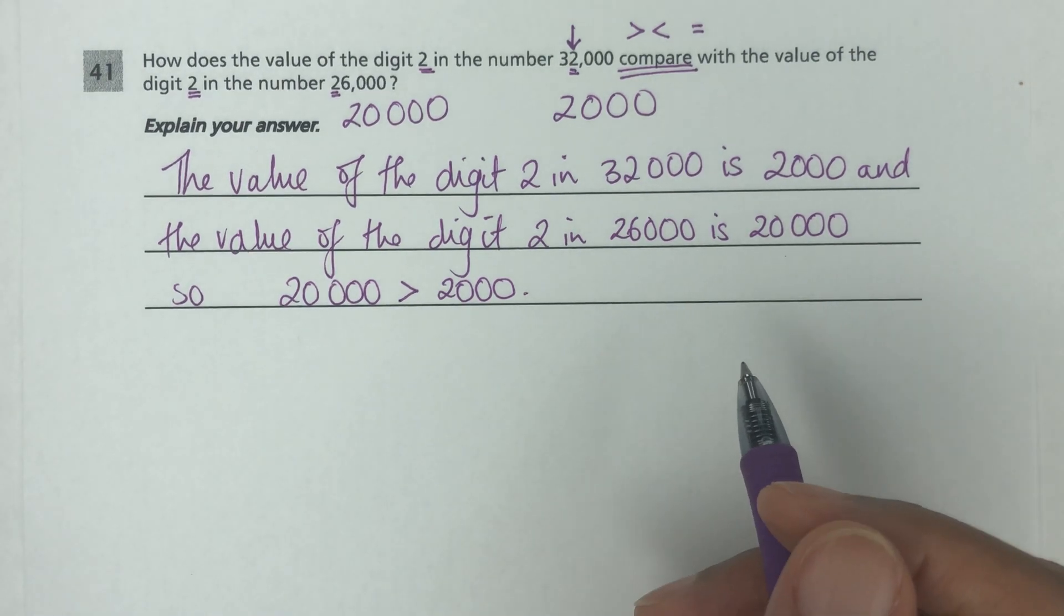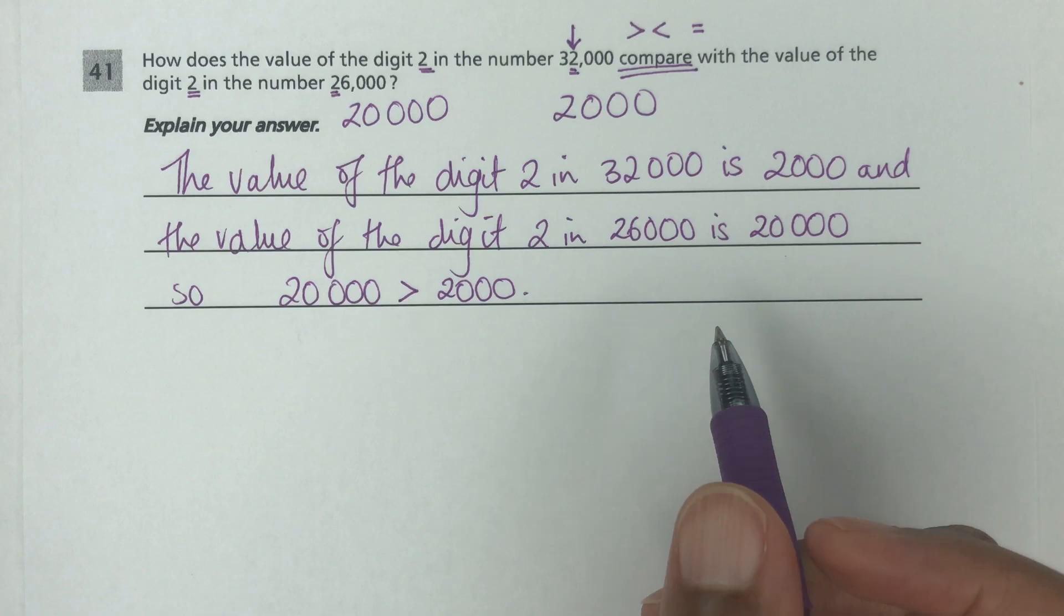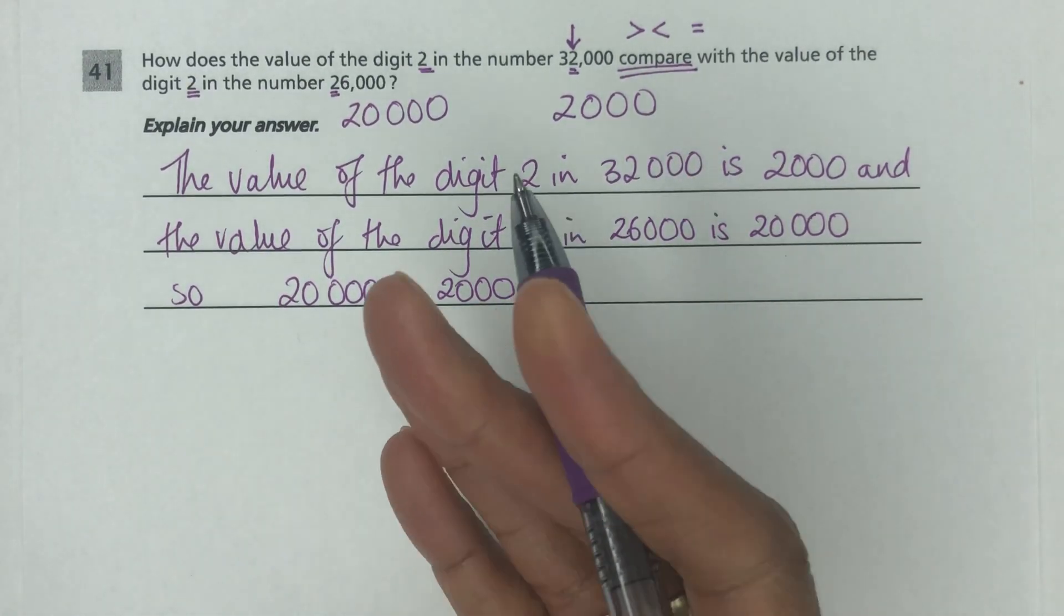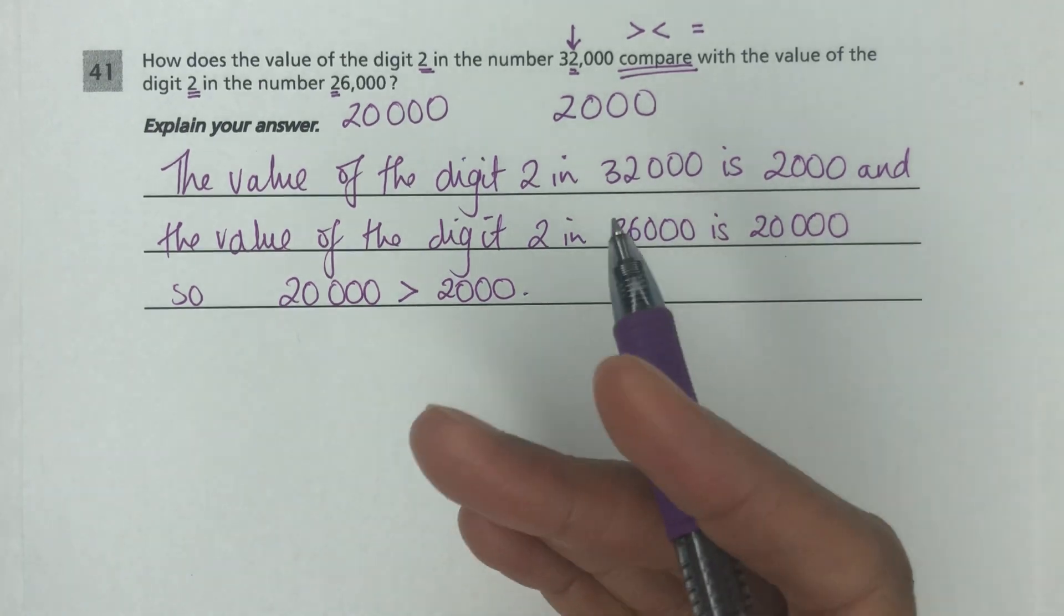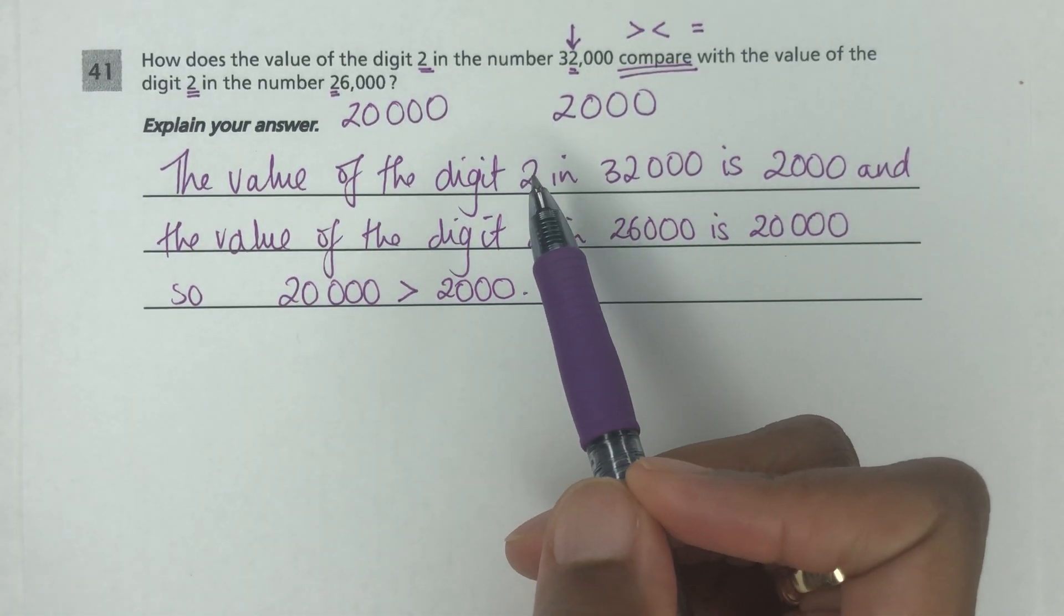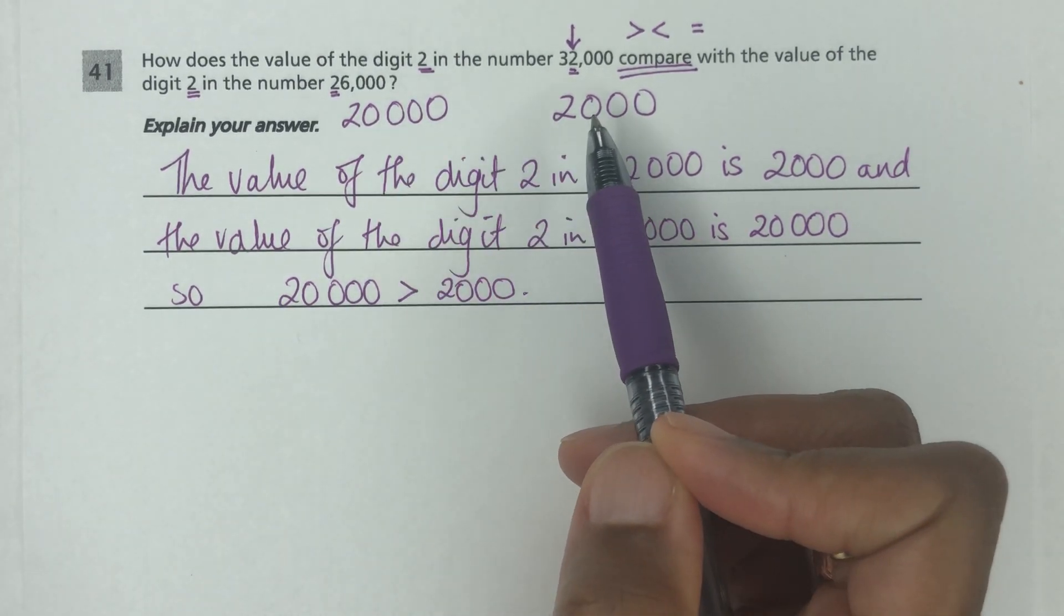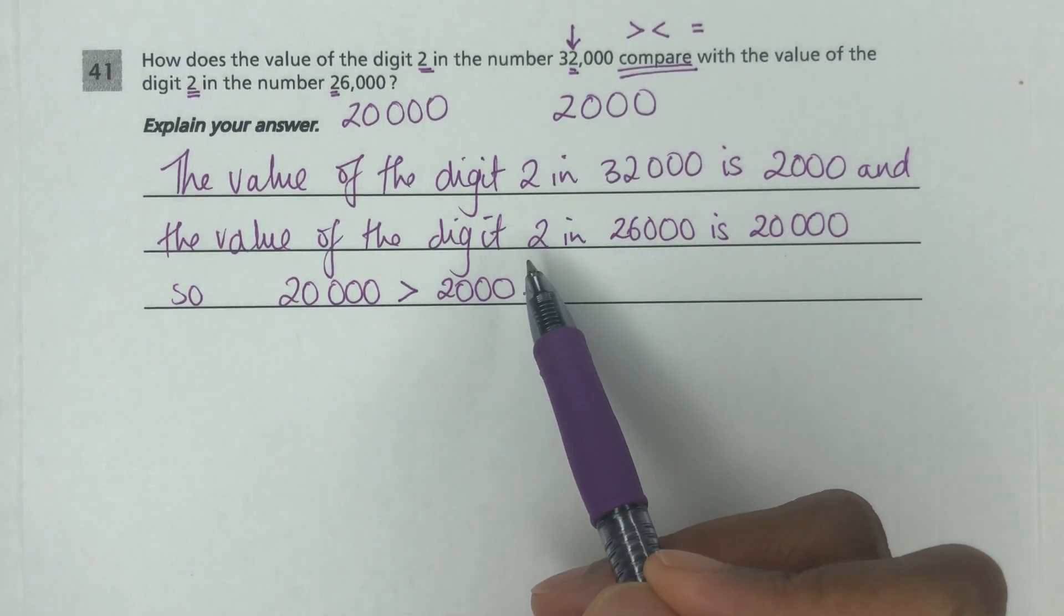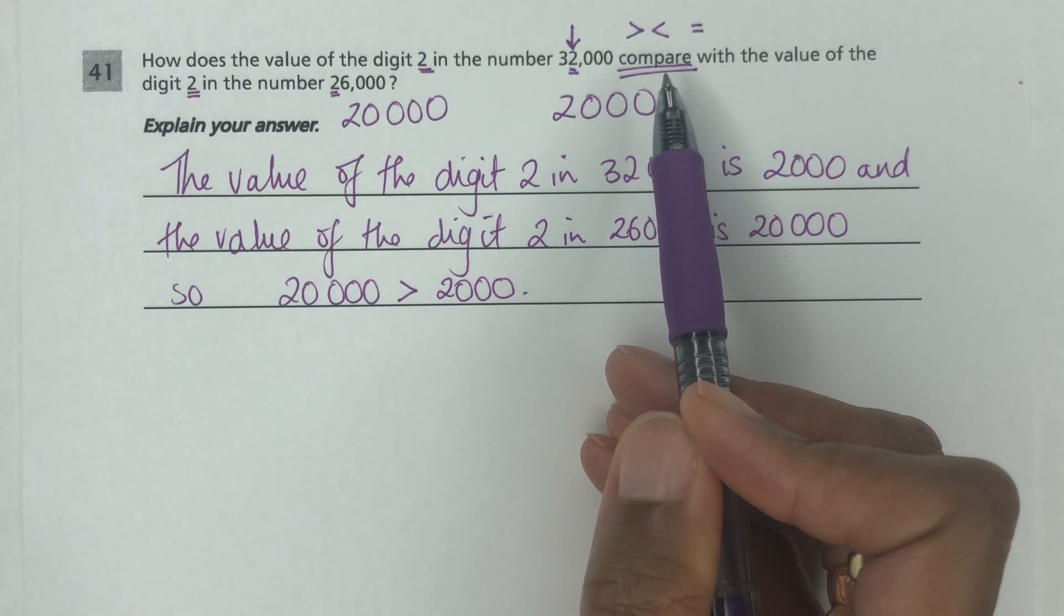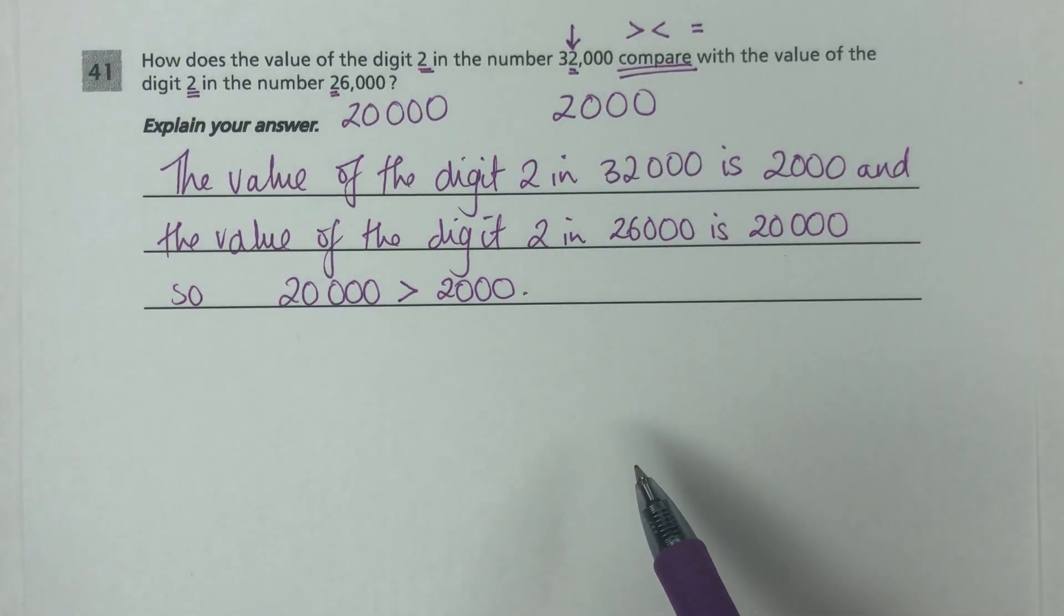That's it. That's all they need you to put. When you're comparing, you're just saying if one number is higher, lower, or equal to the other number. They're testing two things: does the student know place value, and can the student explain what comparing numbers means.